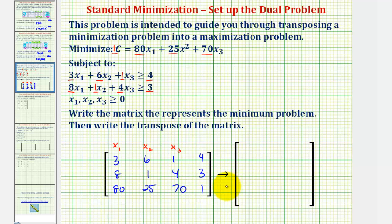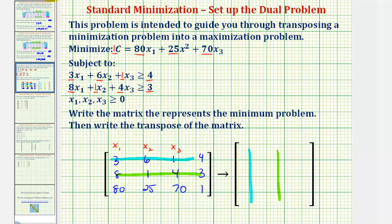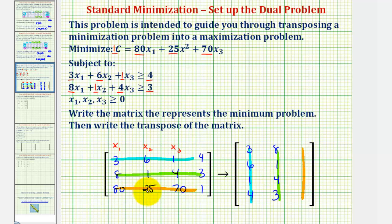The next step is to transpose this matrix, which means the rows become the columns. The first row becomes the first column: three, six, one, four. The second row becomes the second column: eight, one, four, three. The third row becomes the third column: eighty, twenty-five, seventy, and one.